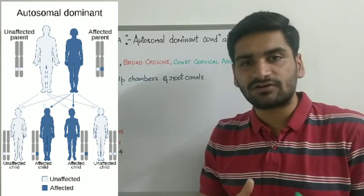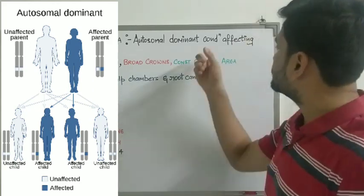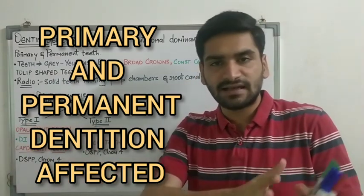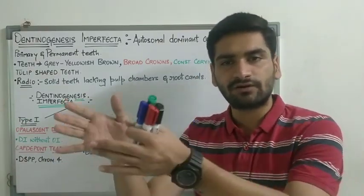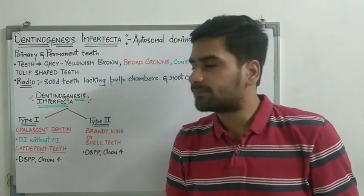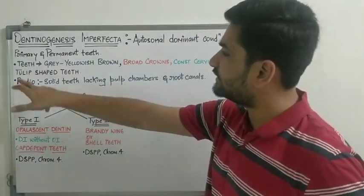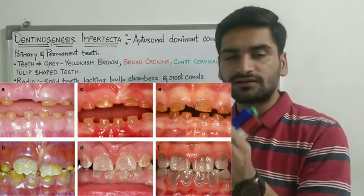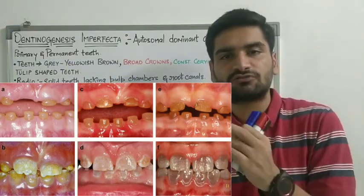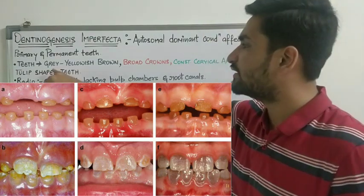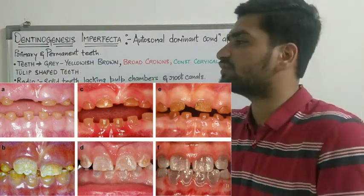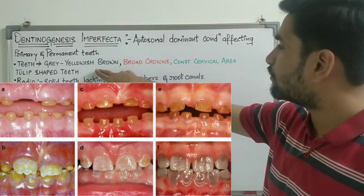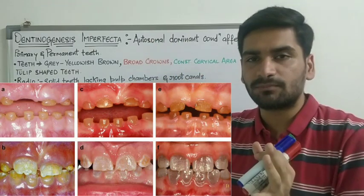This is a genetic disorder which is autosomal dominant in nature, and it is going to affect both primary and permanent teeth. The teeth may turn to gray or yellowish brown in color. The enamel over the teeth is going to wear off very easily, and there will also be attrition of dentin over time. The teeth will appear grayish or yellowish brown in color.